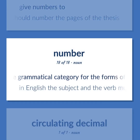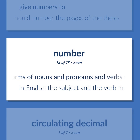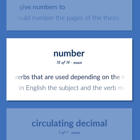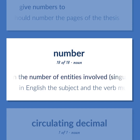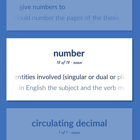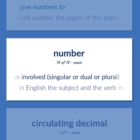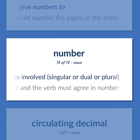The grammatical category for the forms of nouns and pronouns and verbs that are used depending on the number of entities involved, singular or dual or plural. In English the subject and the verb must agree in number.